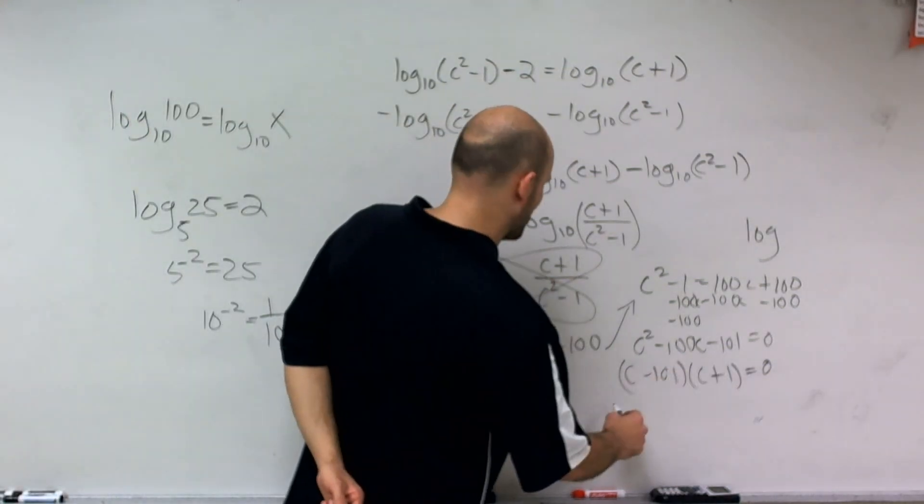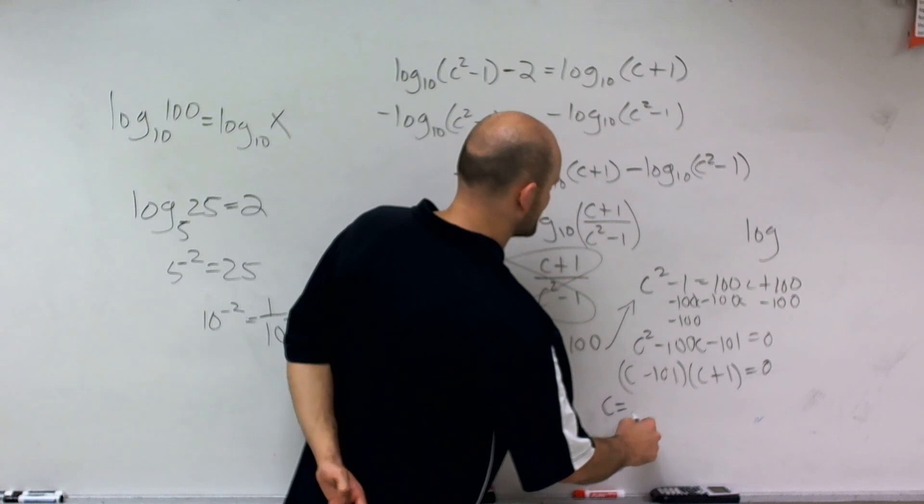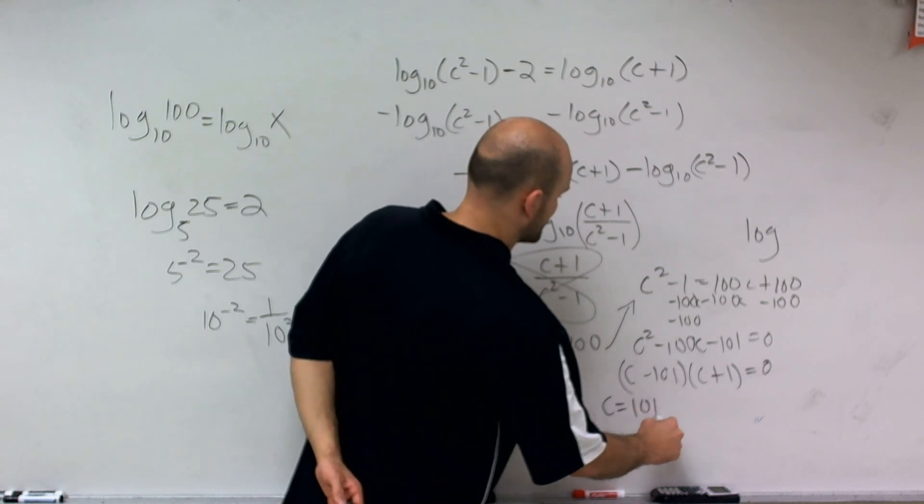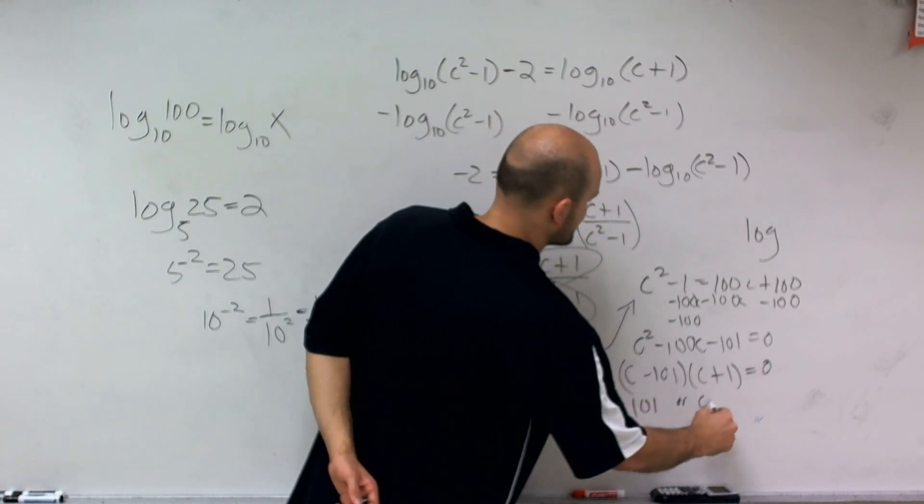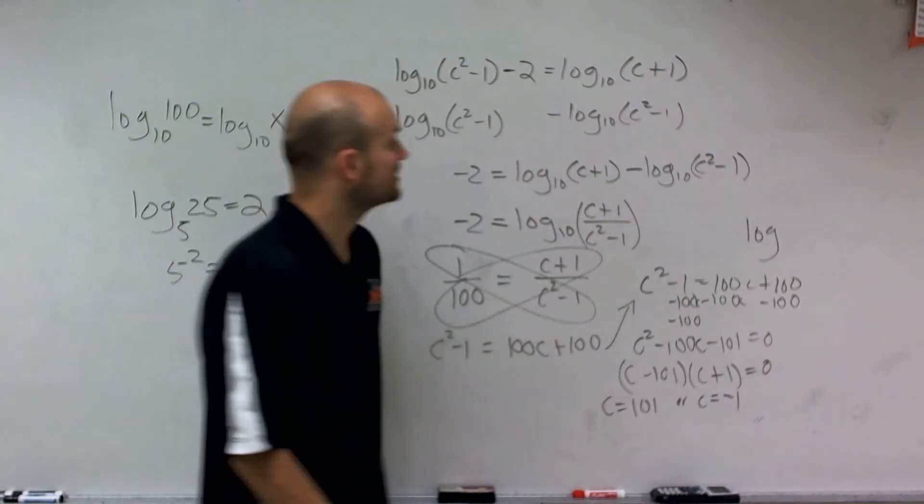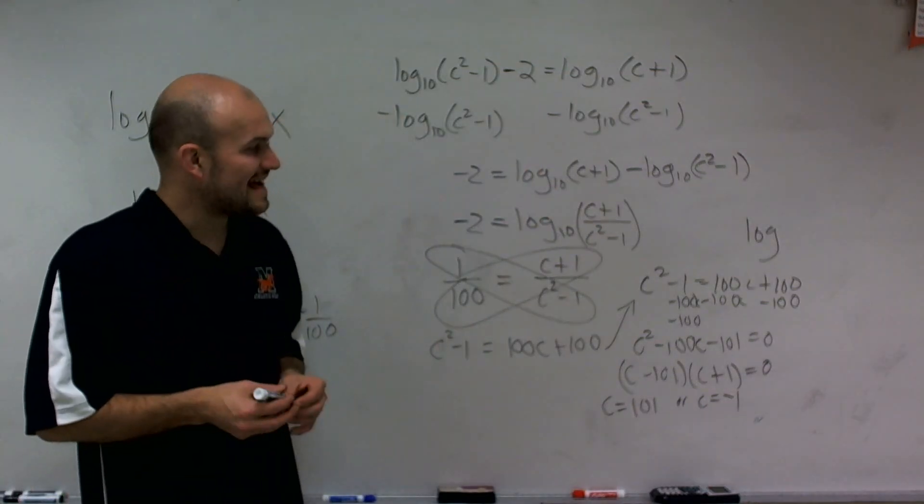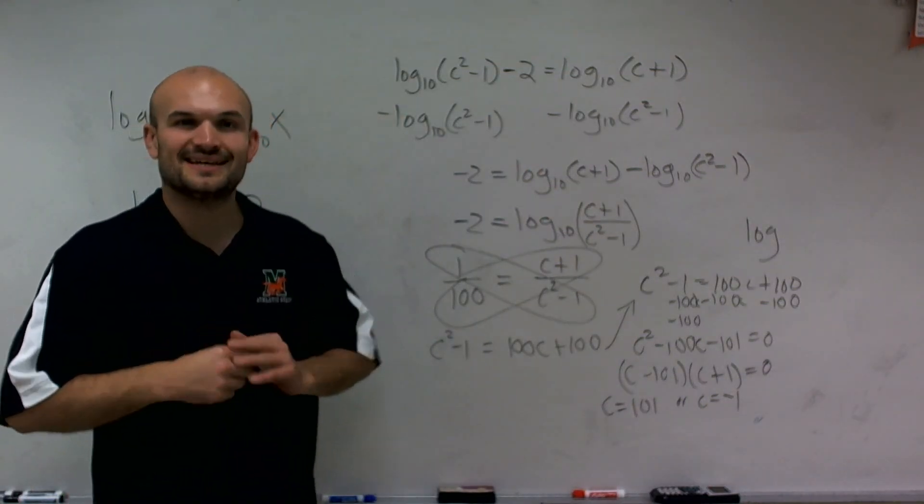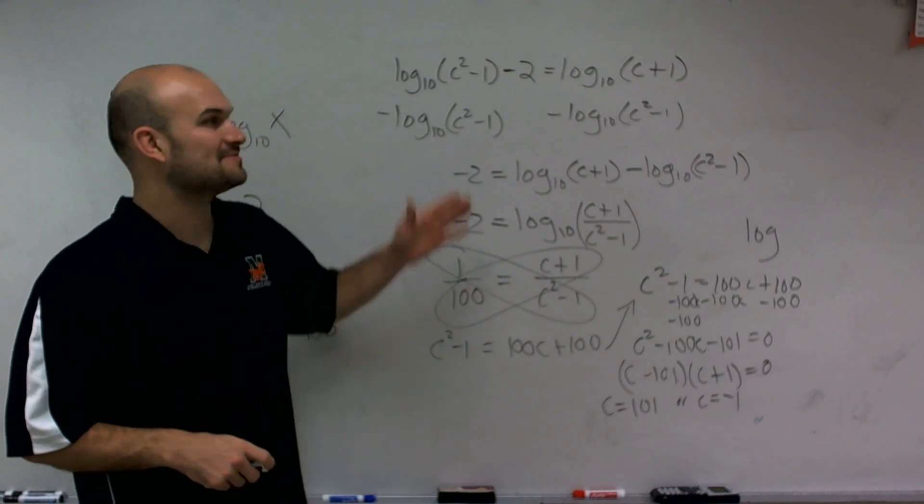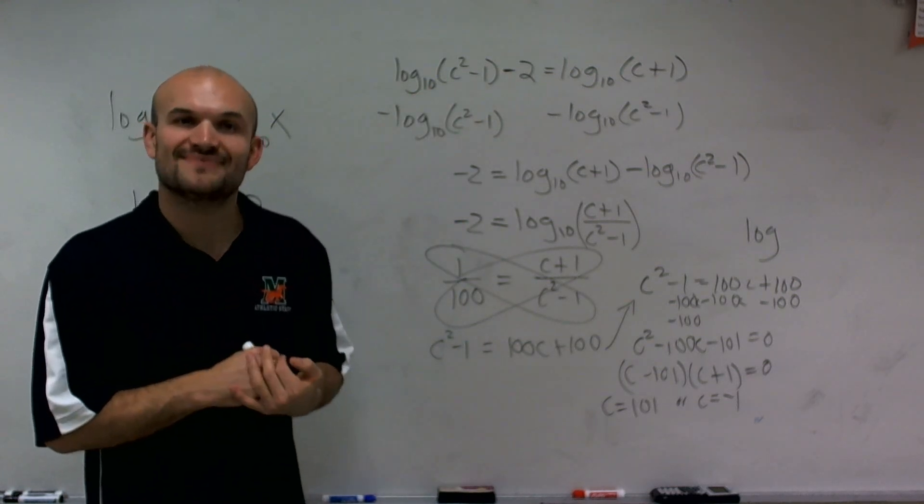Therefore, by now applying the zero product property, I can say c equals 101 or c equals negative 1. So there you go, ladies and gentlemen, that is how you find the value of c by using the quotient property of logarithms. Thanks.